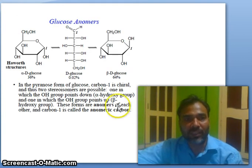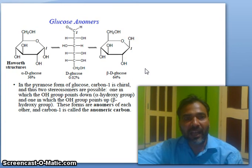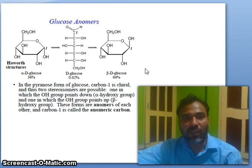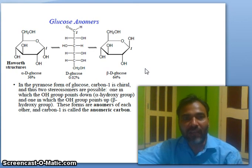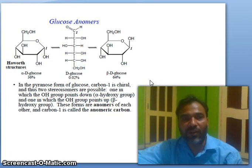In the pyranose form of glucose, carbon one is chiral and thus two stereoisomers are possible: one in which the OH group points down — alpha — and one in which the OH group points up — beta. These forms are anomers of each other and carbon one is called the anomeric carbon.